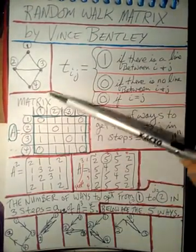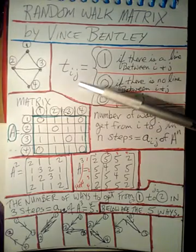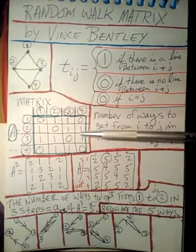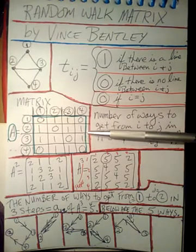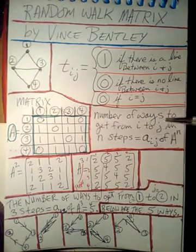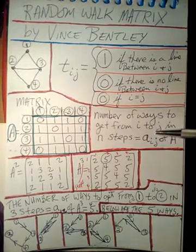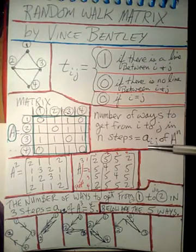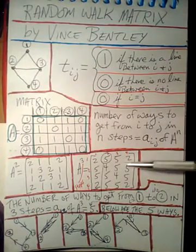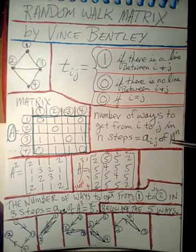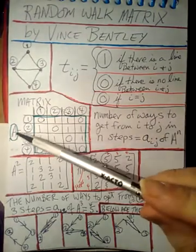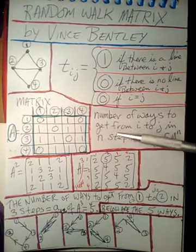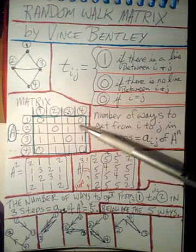Why are we doing all this work? What we're going to figure out is the number of ways to get from one city to another city in a certain number of steps. The way we do that is by finding a specific element in a matrix where A is raised to some power, and that power represents the number of steps. Let me explain this with an example.